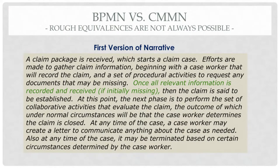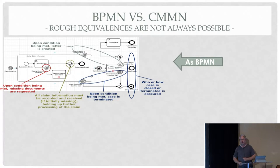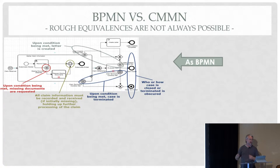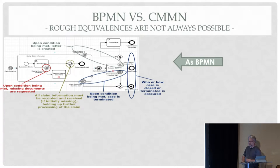Here is an example of a narrative — the presentation will be made available so just focus on the text in green. Once all relevant information is recorded and received, if initially missing, the claim is said to be established. If I look at this from a BPMN standpoint it will look something like this: I've used a series of boundary events — both non-interrupting and interrupting — to capture changes in state of the claim in order to direct it into the pathways it's supposed to go. Some things are relatively clear, but how we actually exit the system is a little strange, obfuscated by the end events.